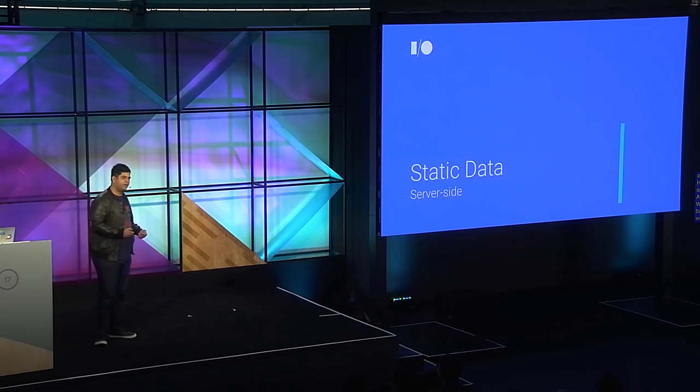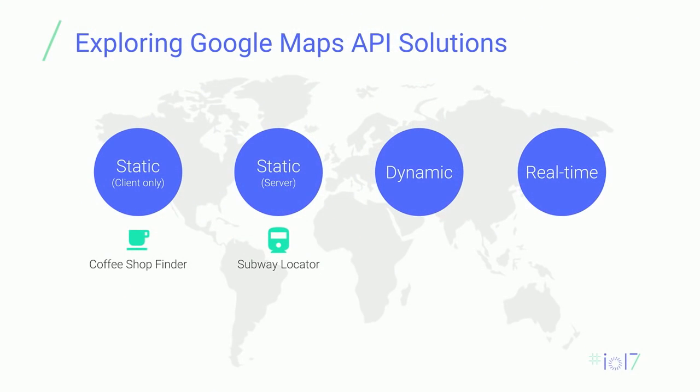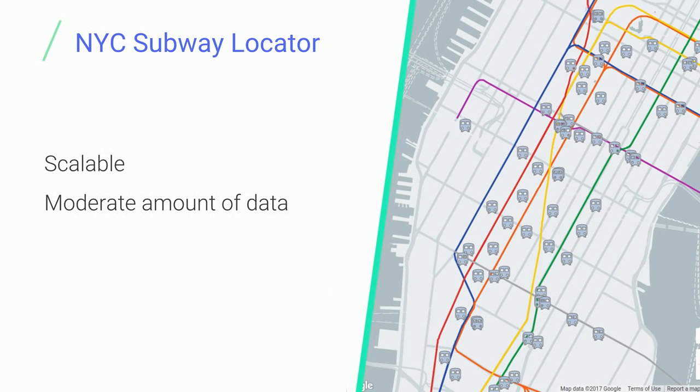Let's take it one step further. What about situations where we have more data and do need a server-side component? For this, we're looking at the New York City subway locator. In New York City, there are many, many subway stations — a lot of data. You don't want to throw all of that on a map at once, because it becomes too noisy, slows performance, and the user experience suffers. So we want to make sure our application remains scalable.